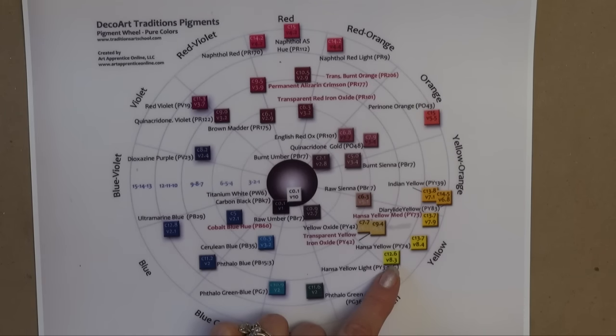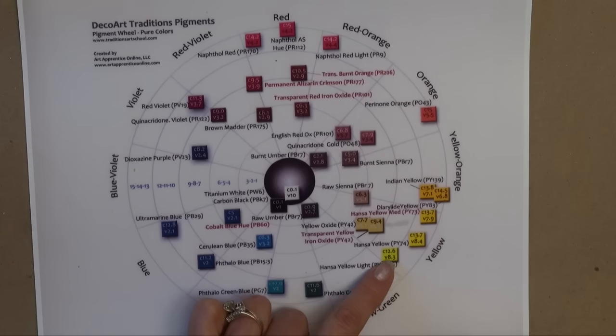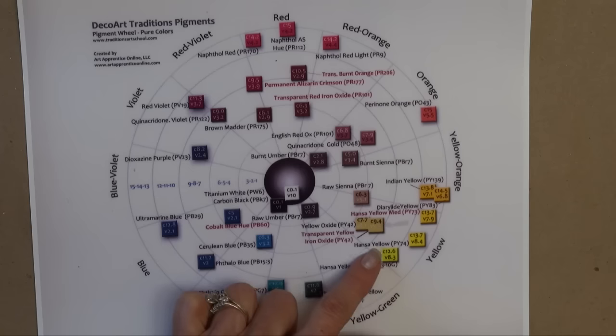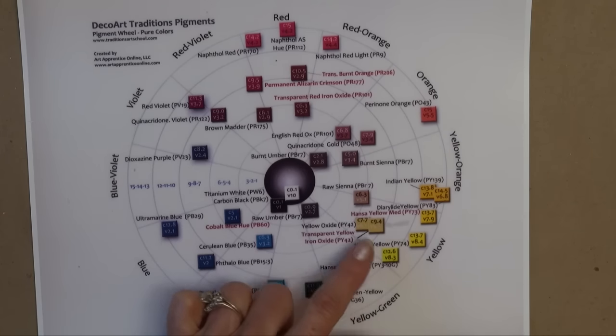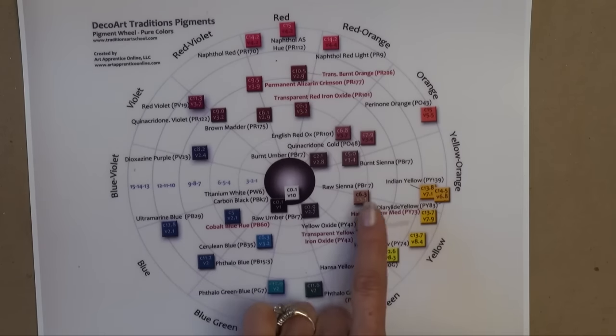Another benefit of this pigment wheel, let's go back to this Hansi Yellow Light. If I was looking for an earth color to tone this color, you know colors are too intense, maybe I don't want to use it straight out of the bottle. I don't want to change the color. I want it to stay this nice yellow. I can come in towards the center and we've got yellow oxide here, and I can go even further to raw umber. So this shows me raw umber is one of yellow's earth colors. We also have raw sienna over here we can use if you want to tone it. It's going to make it a little warmer as you can see because it is closer to the warmer yellows.